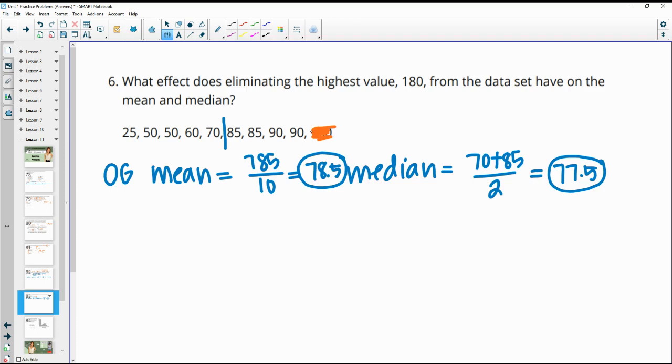Then we'll want to go in and delete the 180. So we know all of these are going to get lower, right, since we deleted a high value. So now when we take and add these up again, or we could take 785 and subtract that 180 that we got rid of. Our new total is 605 and we now have nine values. So when we do 605 divided by nine, we get 67.2 as our new mean. So it goes from 78 to 67.2. And now the median will be this value. So we have four below it, four above it. So our new median is 70. So we go from 77.5 to 70.